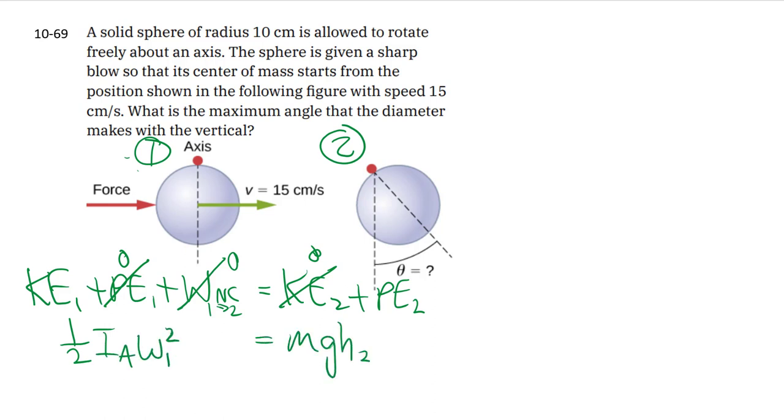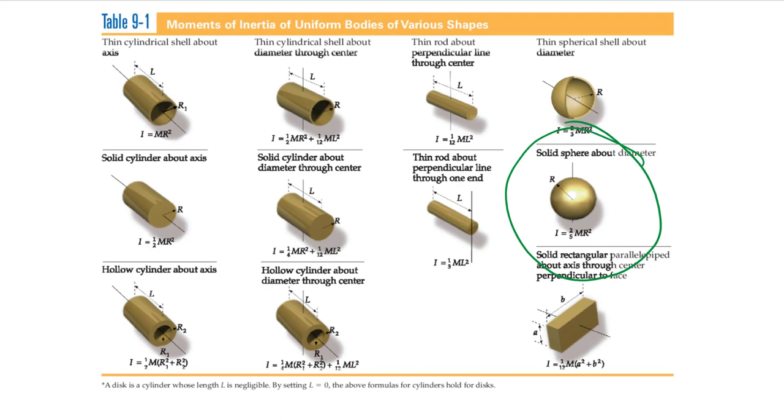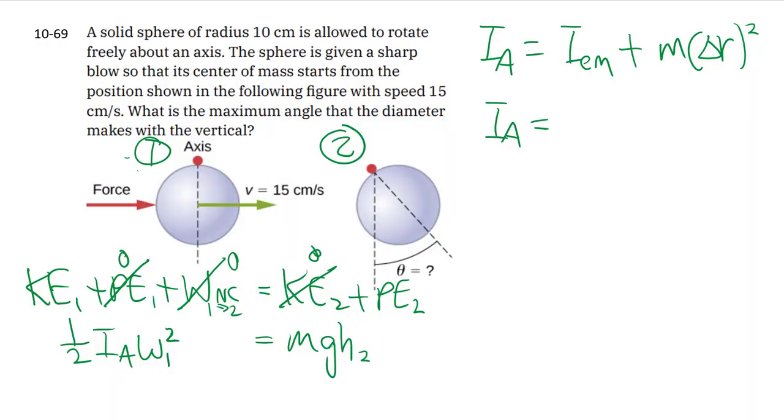Before we can plug them all in, we need to find Ia first, using the parallel axis theorem. The center of mass one we can look up on the table. This is a solid sphere case. Instead of rotating around a line through the middle, we're rotating around a line on the edge. So we still use 2 fifths m r squared plus the shift here is just r, so that's m r squared again. So altogether, that's 7 fifths m r squared.